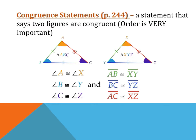Our next vocabulary is congruency statements. These are statements that say two figures are congruent, so order is very important. Keep in mind all your corresponding parts — there are six total. Angle A is congruent to angle X; include your angle symbols. When referring to corresponding sides, make sure you have your segment bar above the two letters. There are six total: three sides and three angles that correspond and are congruent.